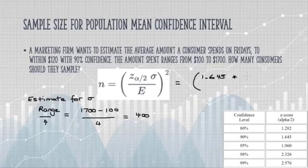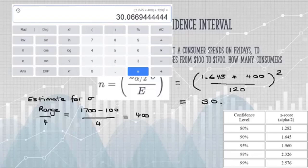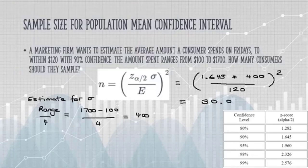We're given a margin of error, they want to find the mean within $120. And when I work that out on a calculator, I get 30.07. So the number of people we need to sample is 31.